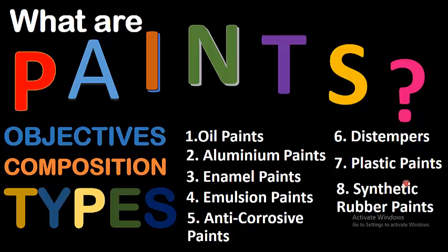Hello guys, welcome back to my YouTube channel Being Engineer. In this video we are going to learn about paints — what are paints, what are their objectives, what is the composition of paints, and what are the types of paints. Types include oil paints, aluminium paints, enamel paints, emulsion paints, anti-corrosive paints, distempers, plastic paints, and synthetic rubber paints.